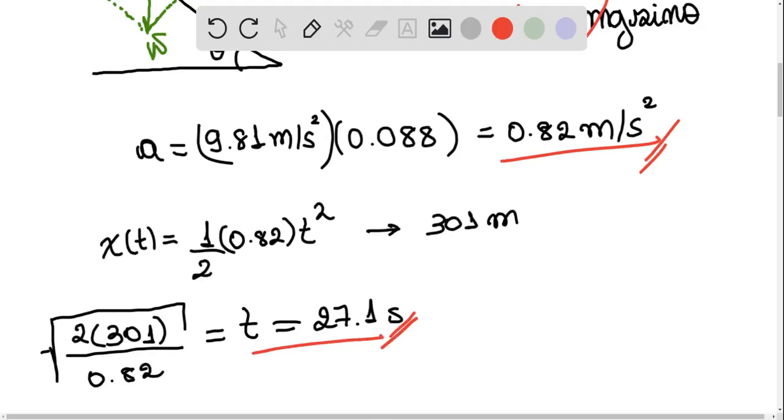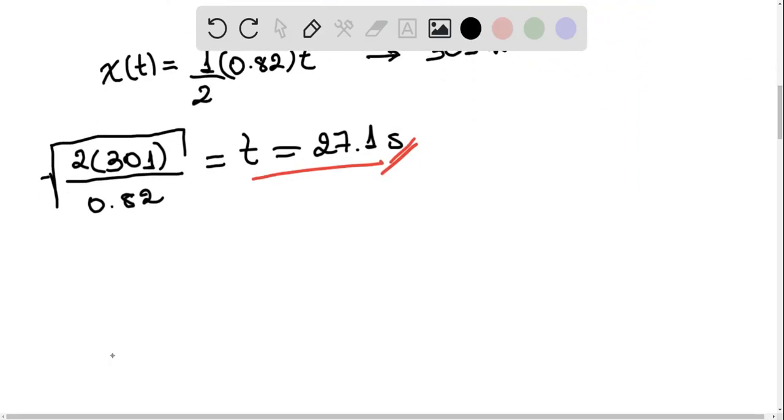Now in question B, we want to find what is going to be the velocity of the object when it reaches the end of the road. So the expression for velocity in one-dimensional motion is that the velocity as a function of time is going to be equal to the initial velocity plus the acceleration times t.